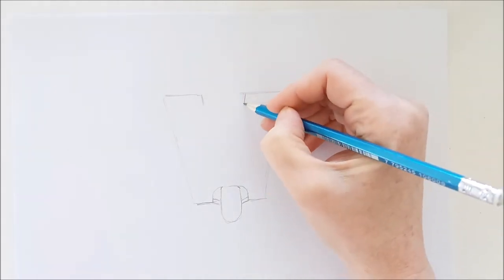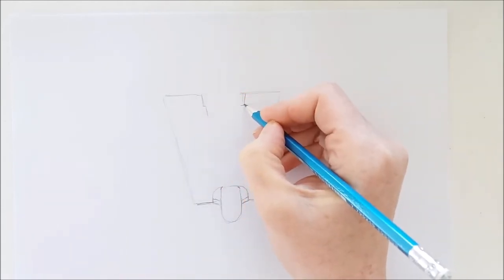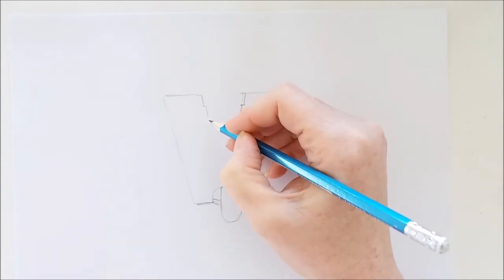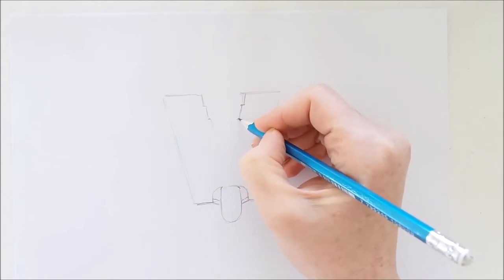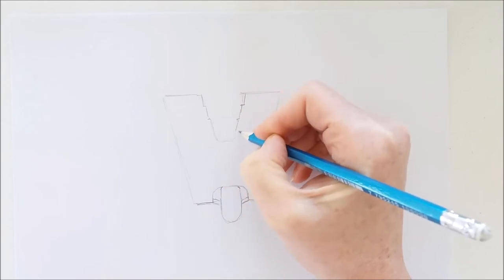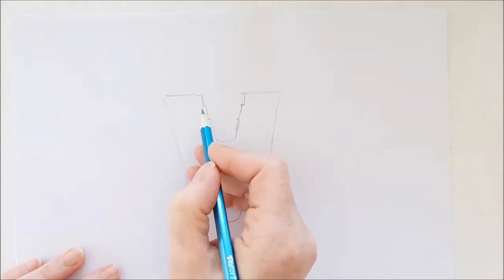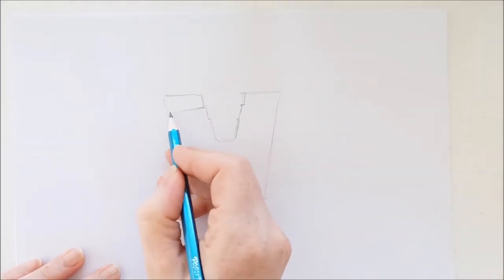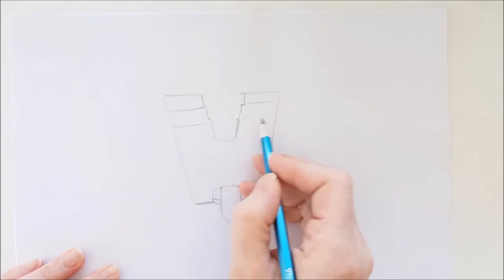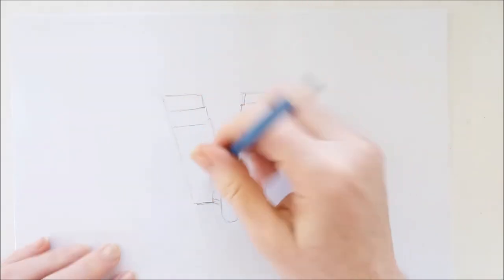The next thing we need to do is add some of the details of Claptrap. I'm drawing two lines that angle down, then a little line that goes out with another angling line down. Then we'll do that again right here and connect it with a rounded line. I'm going to draw two horizontal lines here and over here. These are just some of the details of Claptrap.